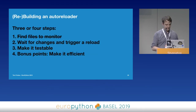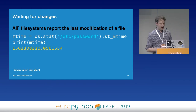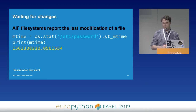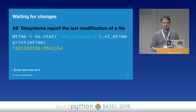We found the files we want to monitor. Now we want to watch for changes and trigger a reload. All file systems report the last modification time of a file. There's a function os.stat() — you give it a file path and it returns a structure. One of the fields is the mtime, which is the last modification time. We can use this to detect changes, though the last modification time is pretty abstract and can mean different things on different platforms.